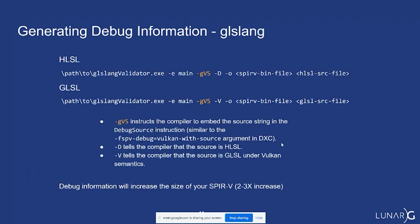On the glslang side, the option is lowercase -g capital V, and that will include the source into your SPIR-V. glslang can compile both HLSL and GLSL.